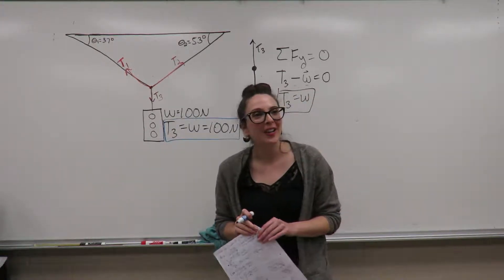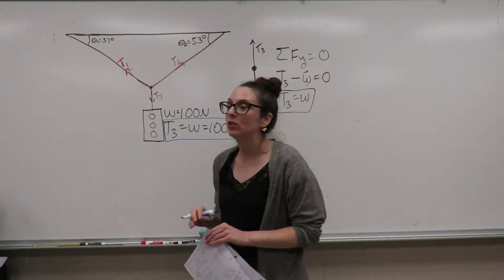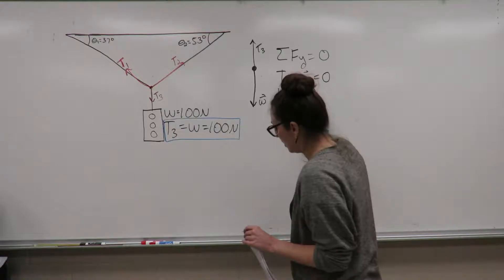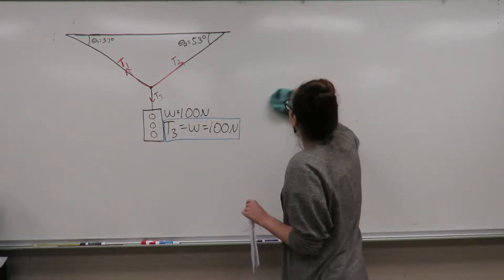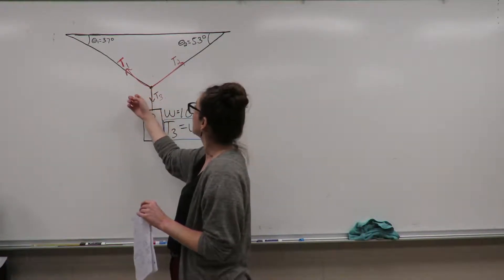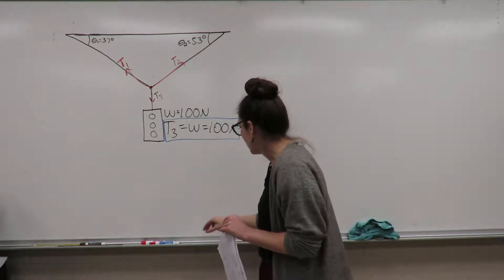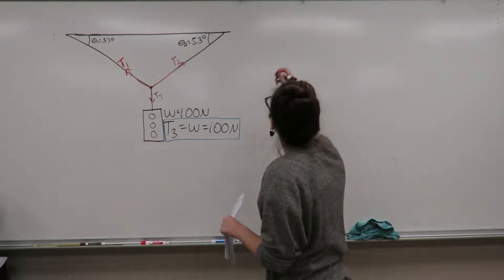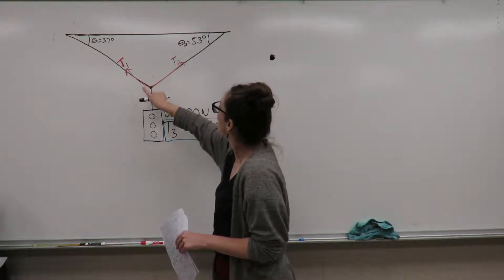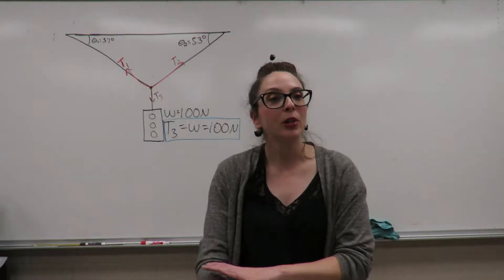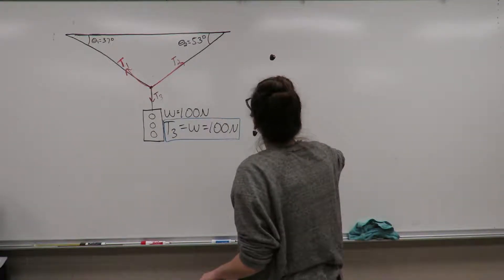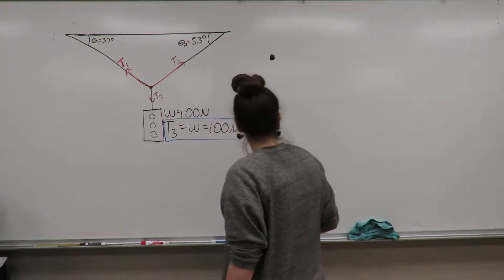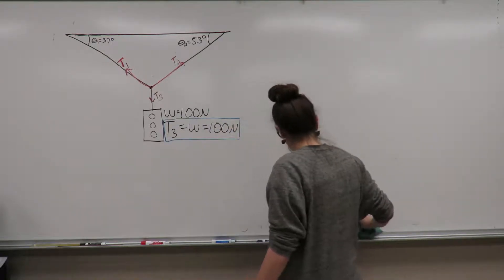So now the harder part is going to be trying to find what tension one and tension two should be for those cables. I'm going to go ahead and erase all this work that we just did to find T3, and work on making equations for the sum of the forces acting on the central knot right here, where all of these tension forces are joining up together. So I'm going to draw a free body diagram for this spot, around which all of those tension forces are acting. We can just go ahead and use this figure that I already have here. We already know T3 acting downward is going to be 100 newtons.